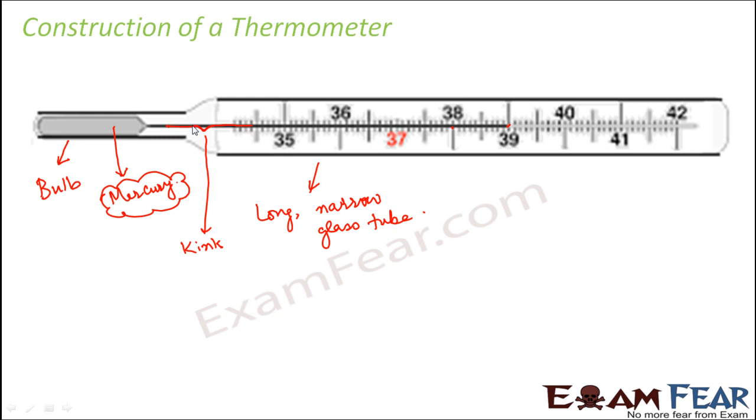So this kink does not allow mercury to fall back on its own. You might ask, what is the need of having a kink? Why do we do not want the mercury level to fall back on its own? Because if there is no kink, what will happen is, as soon as you remove the thermometer or as soon as you take the thermometer out of your mouth, the mercury level will fall back. Because when you bring it out, obviously, this bulb is no more in contact with the hot object. It is no more in contact with your tongue. So the mercury level will fall back.